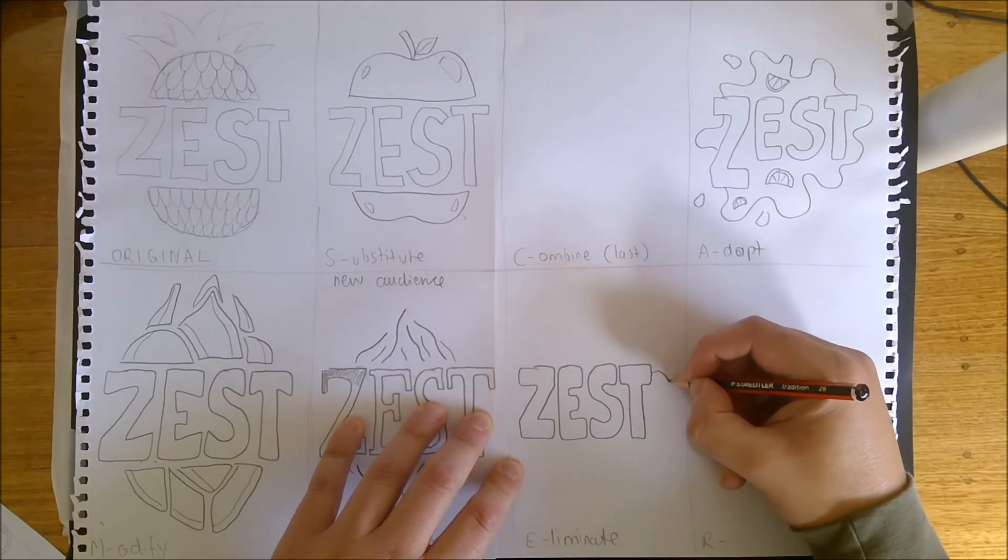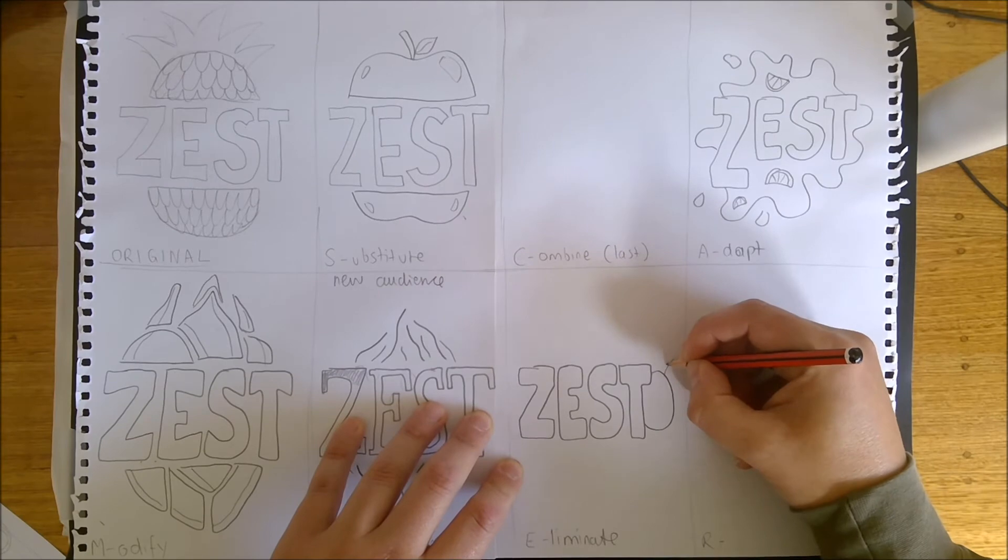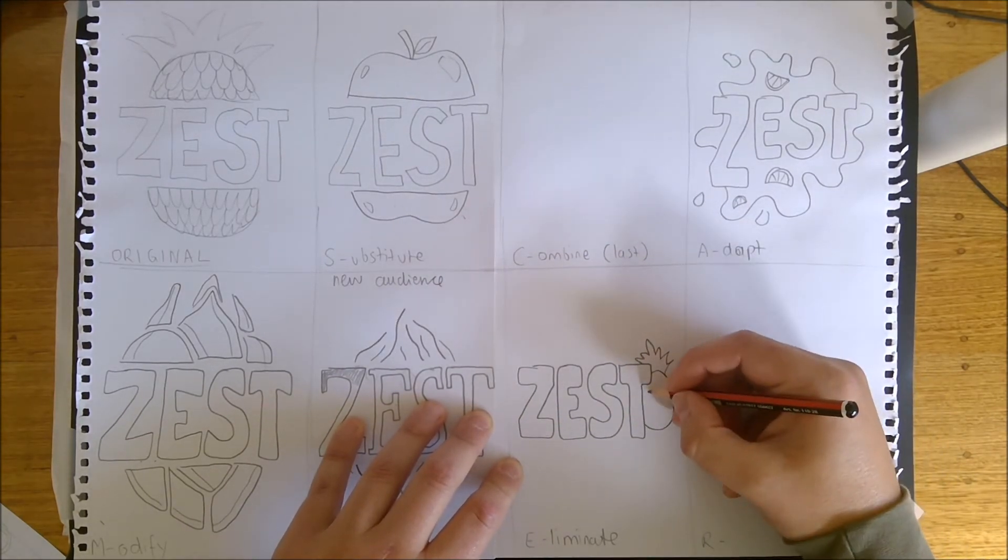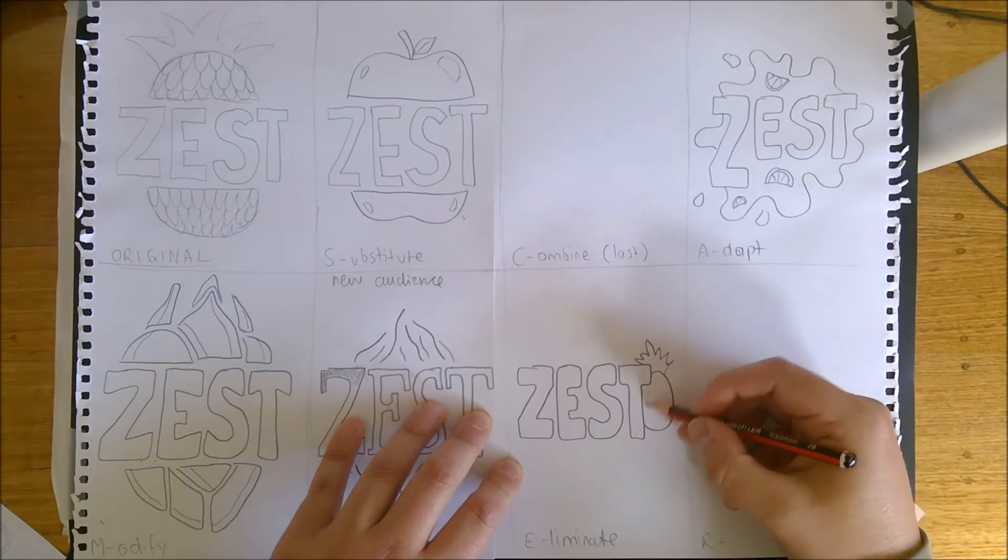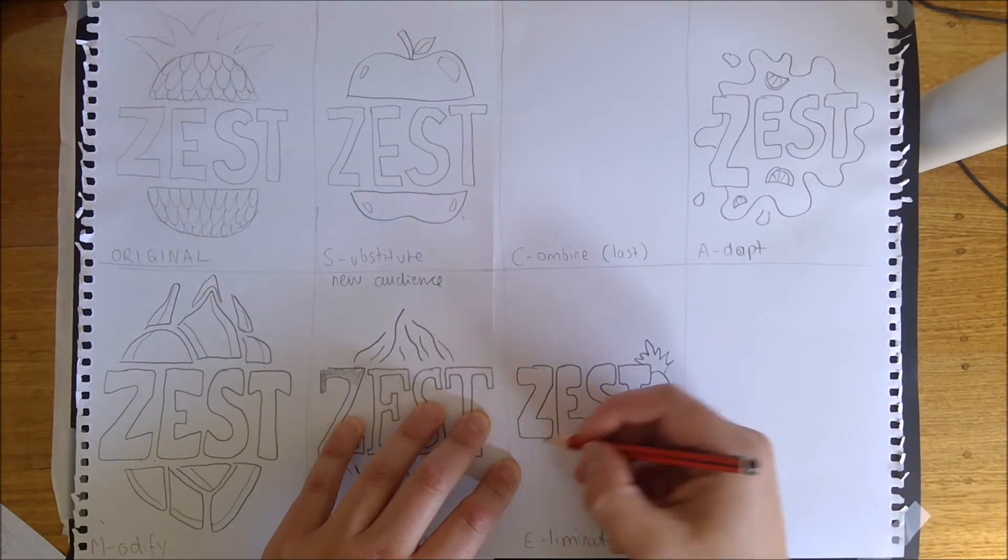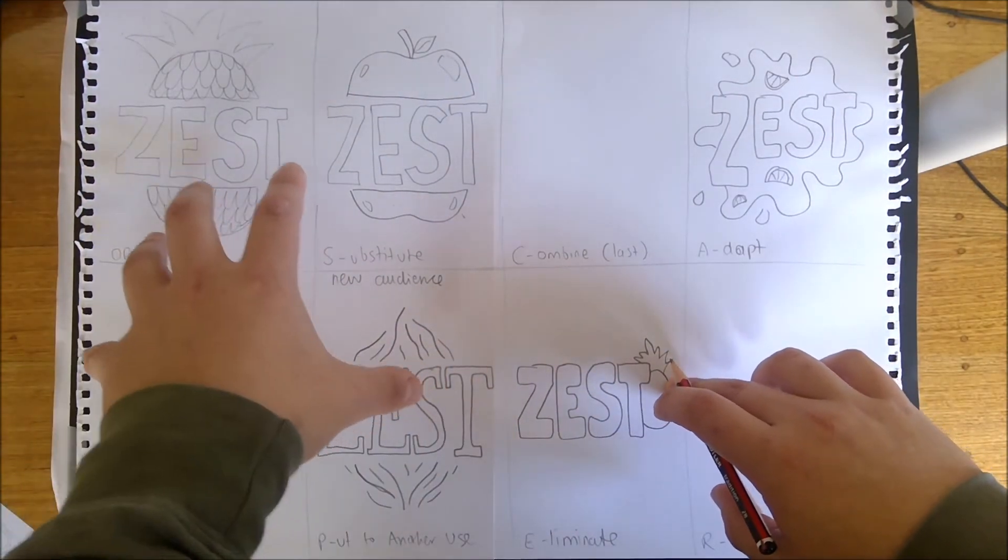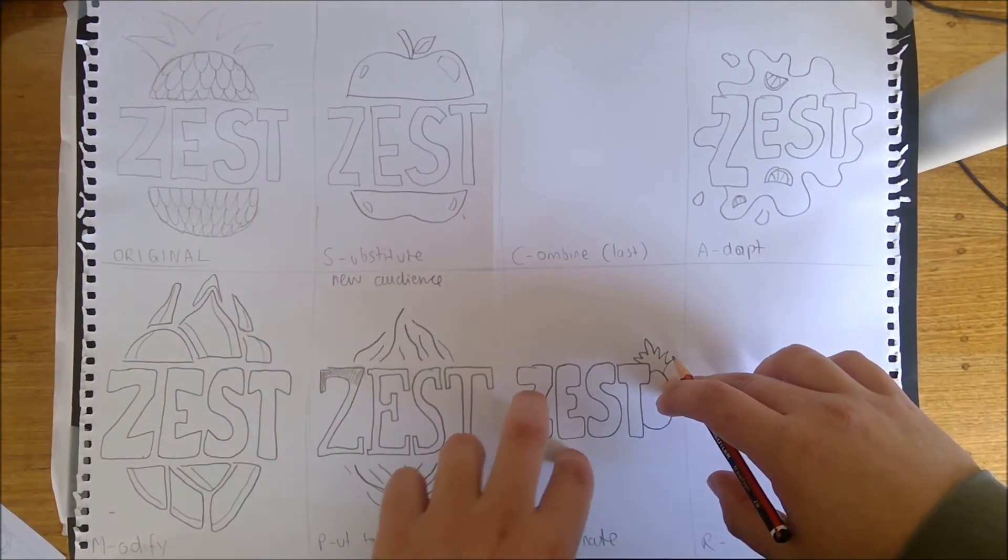And on the side here I'm going to draw a really simplified version of a pineapple, and I'm just going to leave it like so. I could then color that in a flat color. I've eliminated it, I've simplified it - it's a really interesting design but it does still connect to all the ones that I've explored before.